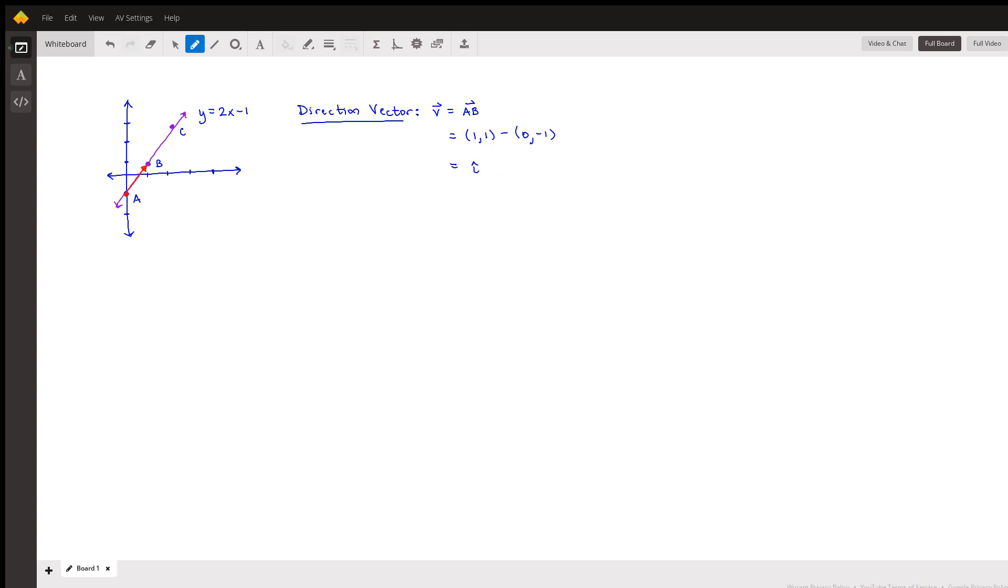Then y components go with y components, so 1 minus negative 1 would make a positive 2, and that's also a vector component, so it's officially j hat. So this would be a vector that points in the same direction as the line, right? So this is kind of nice for a two-dimensional system.